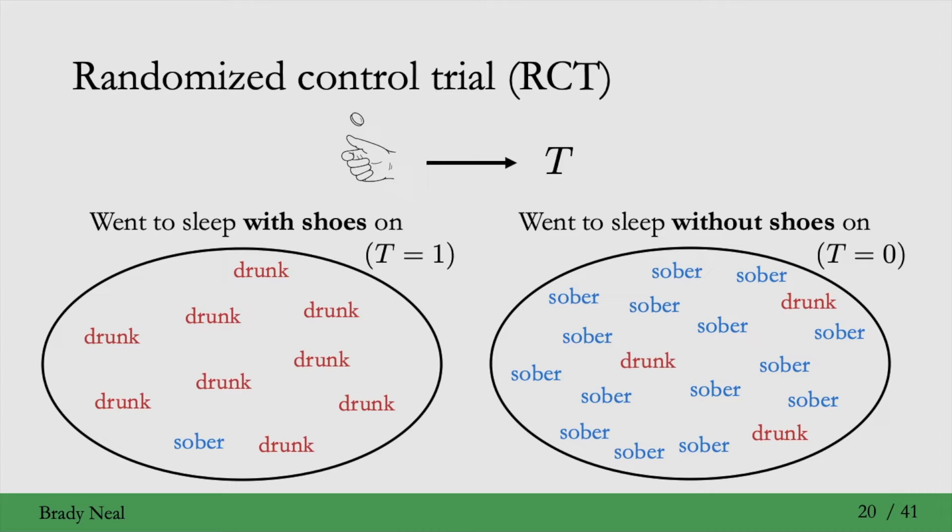Okay, so the treatment groups looked like this, where treatment is sleeping with shoes on. So most of the people who were sleeping with shoes on were drunk. Most of the people who were sleeping without shoes on were sober.